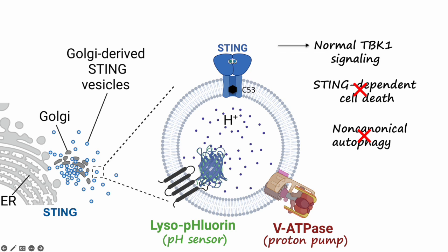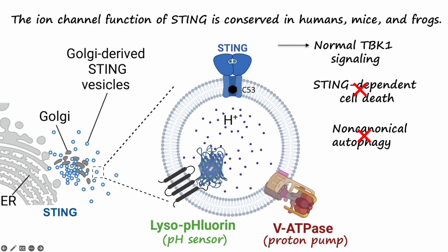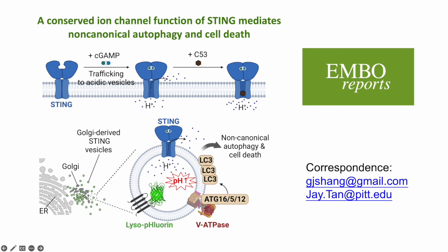Finally, we found that the ion channel function of STING is highly conserved, at least in humans, mice, and frogs. In conclusion, a conserved ion channel function of STING mediates non-canonical functions of the DNA-sensing pathway. This discovery opens new opportunities for selectively targeting the canonical and non-canonical STING functions. I hope you enjoy reading this article. Please feel free to reach out for any questions.